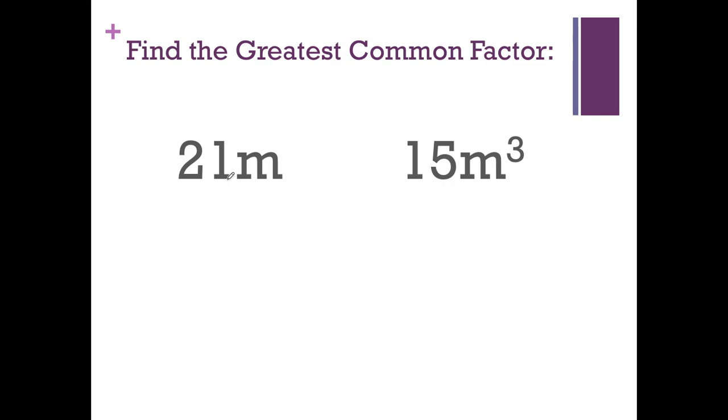Okay, let's do 21m and 15m cubed. Well look at 21. I know that 21 is 7 and 3. And then I know 15 is 3 and 5. Then with these m's, I have 1m over here and then 3m's over here. So they have 1m in common, and looks like they only have the 3 here. So we know it should be 3m.